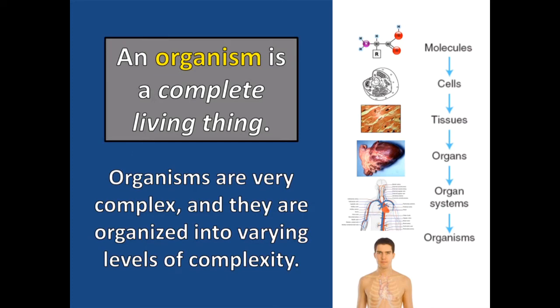An organism is a complete living thing. Organisms are very complex, and they are organized into varying levels of complexity. Those levels include cells, tissues, organs, and organ systems.